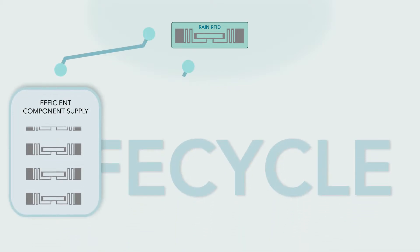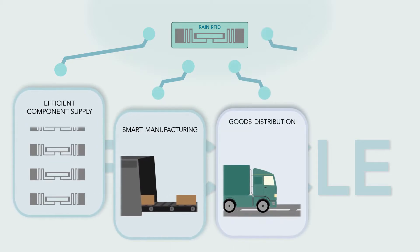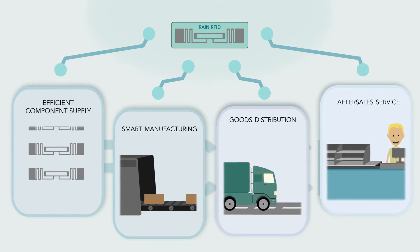RAIN RFID is different from other technologies as it serves the entire product lifecycle, from efficient component supply to smart manufacturing to finished goods distribution and convenient after-sales service.